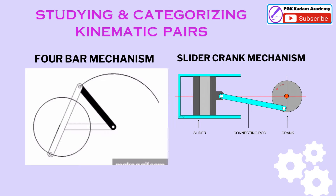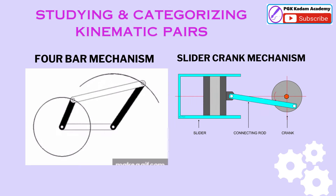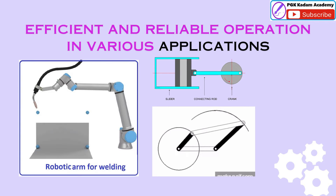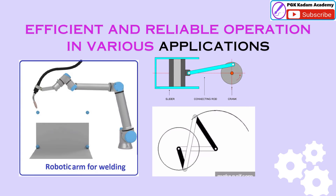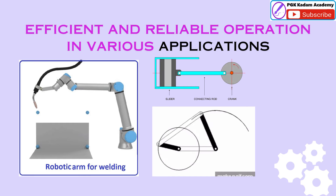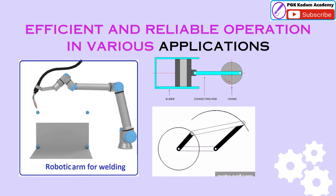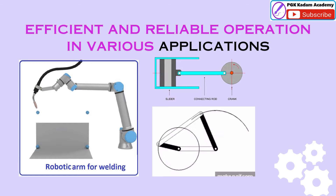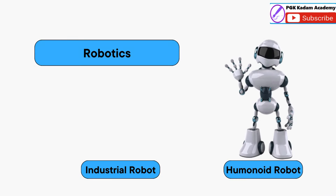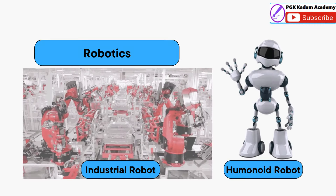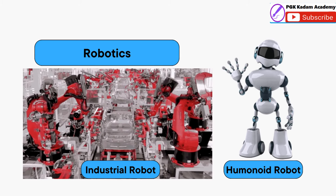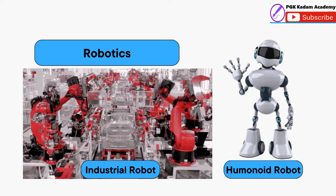Such as basic mechanisms like the four-bar mechanism and slider-crank mechanism. By studying and categorizing Kinematic Pairs, engineers can accurately model and analyze the behavior of mechanisms, predict their performance, and ensure efficient and reliable operation in various applications, including robotics used for welding or any other operations, and machineries.